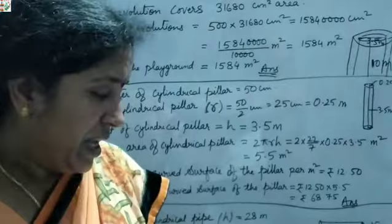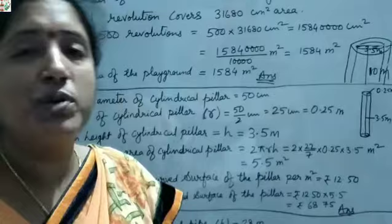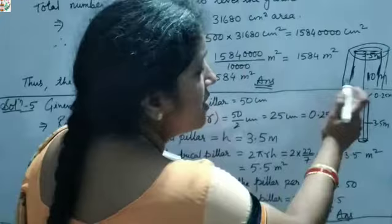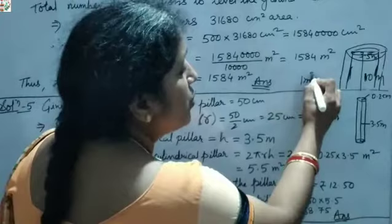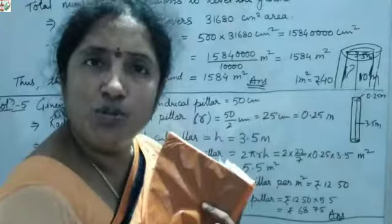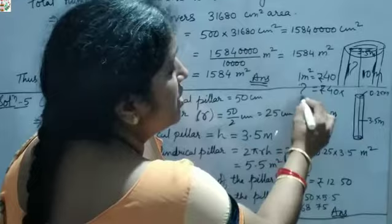The cost of plastering the curved surface is at the rate of rupees 40 per m². We are plastering the inner portion of the well. After calculating the curved surface area, multiply by rupees 40 to get the total cost. That is the answer — do it as homework.